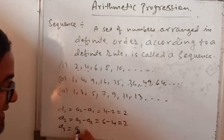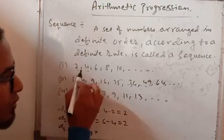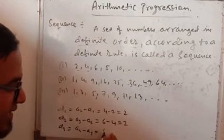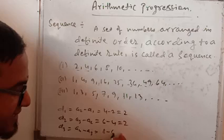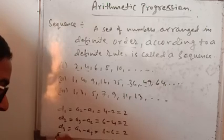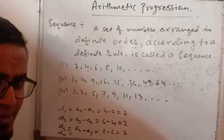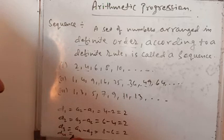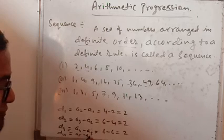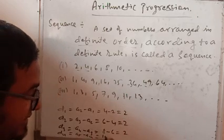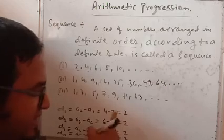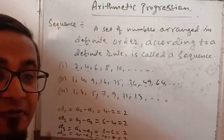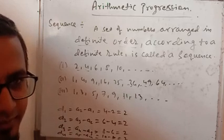Now you find D3. D3 means a4 minus a3. A4 is what? 1, 2, 3, 4 is 8. So fourth term is 8 minus 6, this is 2. Now you see, you can find D4 also. Just I am finding the difference. So a5 minus a4, a5 is 10 minus 8, this also 2. You see, in each cases the difference between the consecutive term is 2, that is common difference. Difference is common.